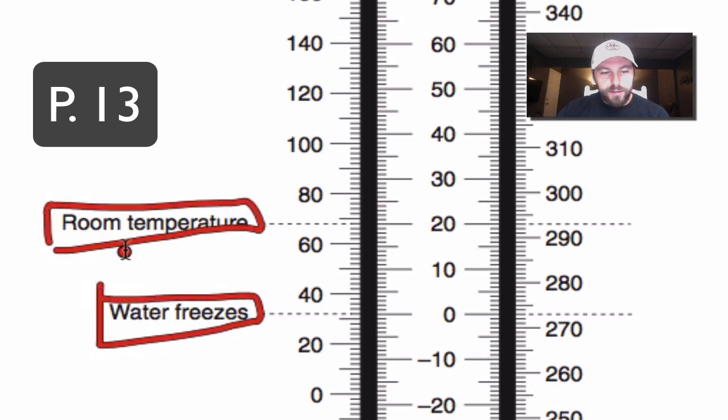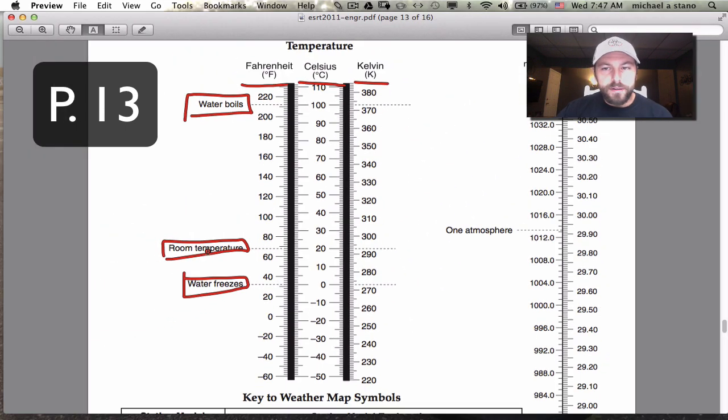You may have learned in the past a formula to convert from Fahrenheit to Celsius, and here in Earth Science, we just use the temperature scale, the conversion chart right here. So it makes it a little bit easier. You don't need to worry about any math or anything like that.